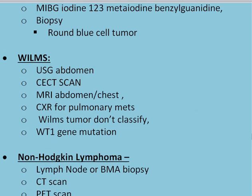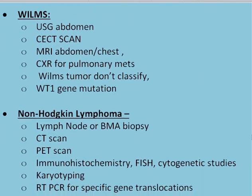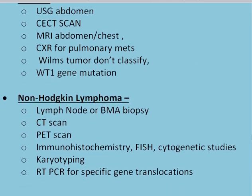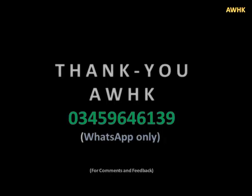For non-Hodgkin's lymphoma, you check the lymph node, do bone marrow biopsy, CT scan, PET scan, immunohistochemistry, FISH, cytogenetic studies, karyotyping, and reverse transcriptase PCR for specific gene translocation. Thank you very much. This was some of the basics about the short case of mass abdomen. You can take guidance from what I have told you, but you can improve it and make your own guidelines.